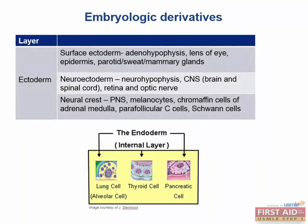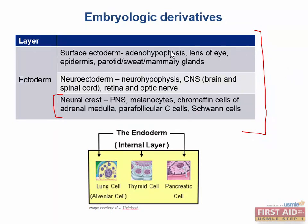Ectoderm is actually broken into the surface ectoderm, neuroectoderm, and neural crest. Highest yield is neural crest. Unfortunately, all of this stuff is very memory intensive. You do need to memorize it for Step 1 — there are more conceptual things, but this is something that you will need to memorize.